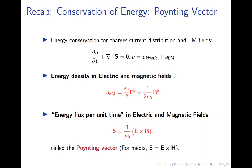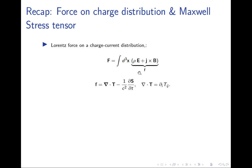For linear momentum conservation, we look at the Lorentz force on a charge distribution placed in electromagnetic fields — fields possibly produced by the charges themselves. The Lorentz force density can be written using Maxwell's equations and vector calculus identities, resulting in an equation expressing force as a divergence of a tensor plus a time derivative of a vector.